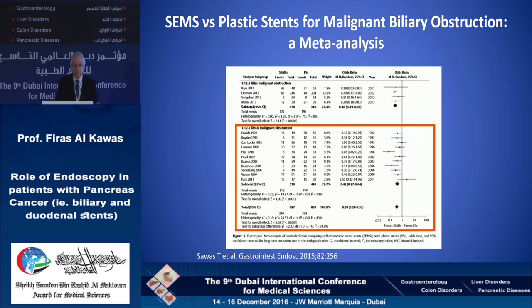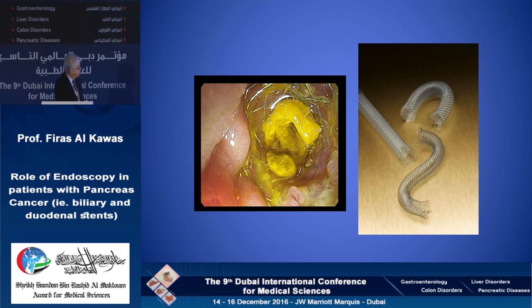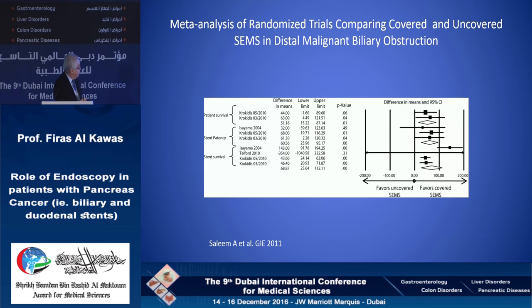Several meta-analyses comparing plastic stents with metal stents show that for patients with pancreatic cancer, expandable stents should clearly be used. Even though uncovered stents last longer than plastic stents, around six months they will also clog. This led to the development of covered stents — partially and fully covered — and meta-analyses suggest covered stents provide an advantage over uncovered stents in maintaining patency longer.